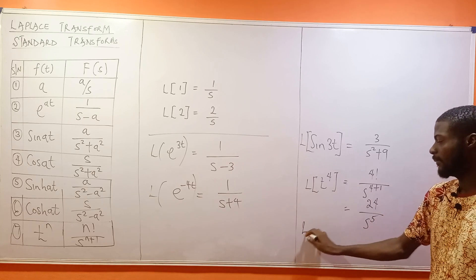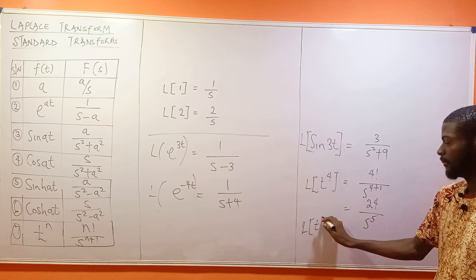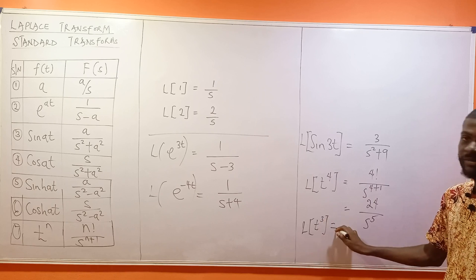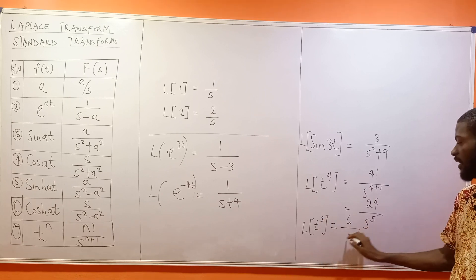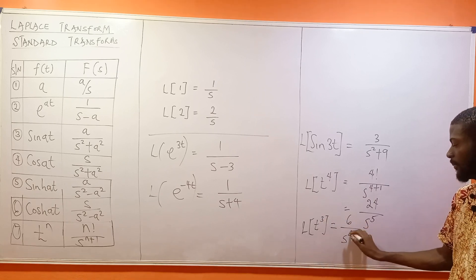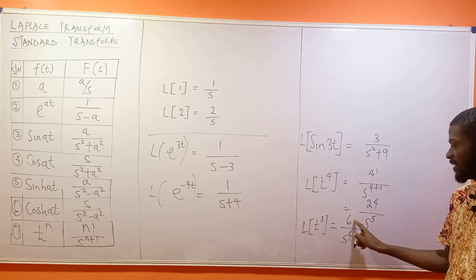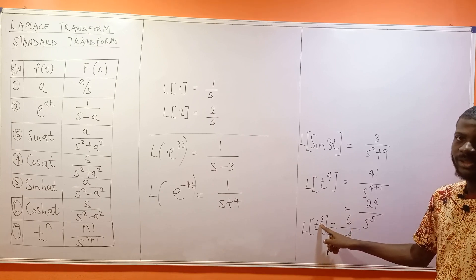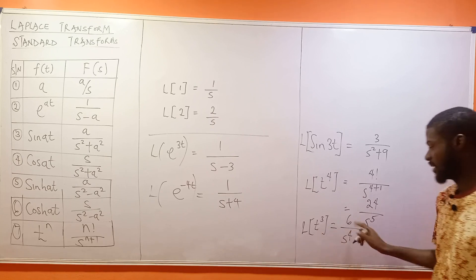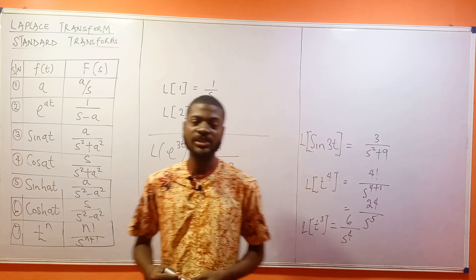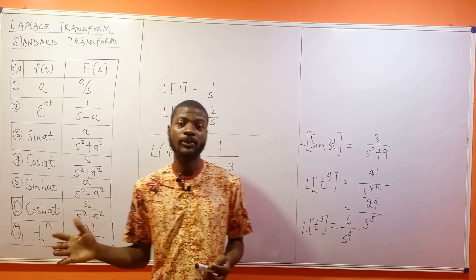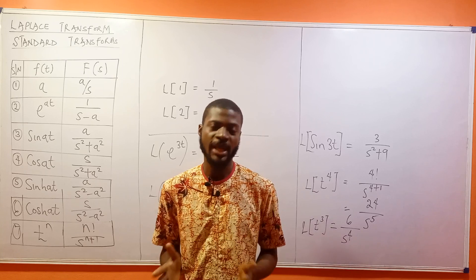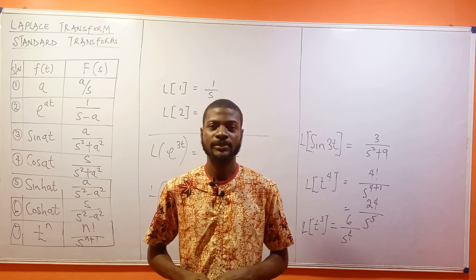What if you have the Laplace transform of T to the power of 3? The result would be 6 divided by S to the power of 4. We get 6 because 3 factorial is 3 times 2 times 1, which equals 6. Thank you very much. This table is the table of standard transforms in Laplace transform.